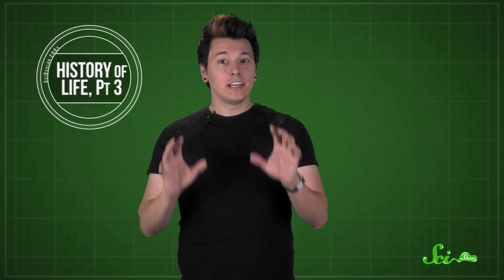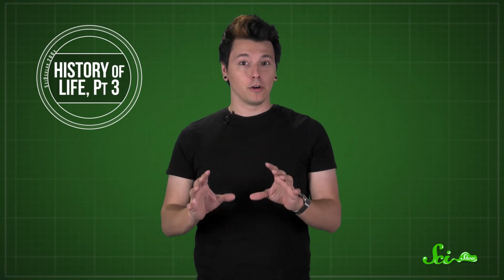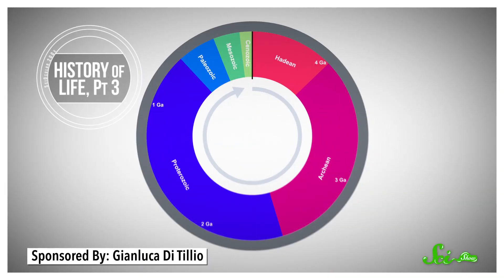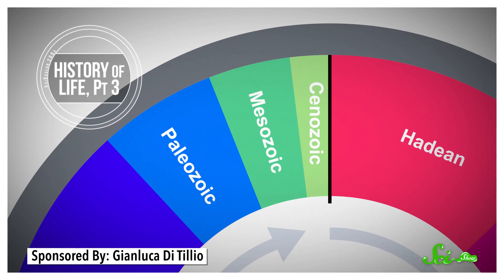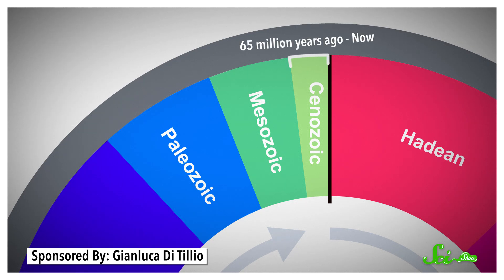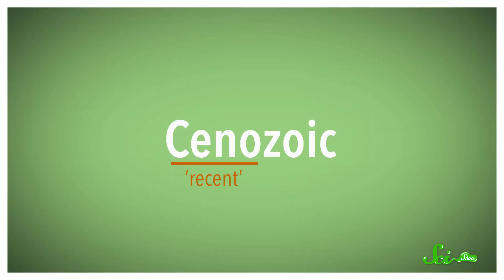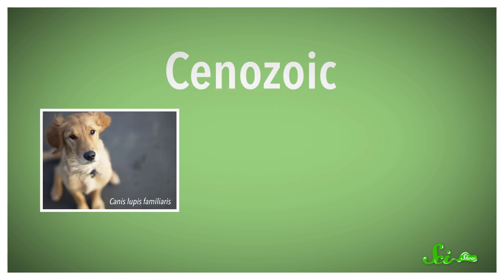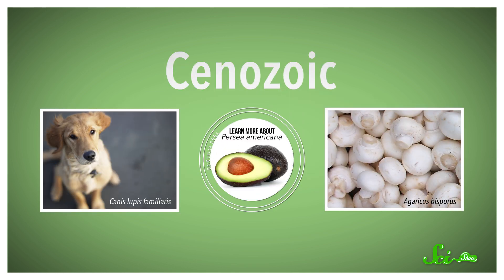Today, we're going to conclude our mini-series about the history of life on Earth by talking about the Cenozoic Era, from 65 million years ago to the present. Cenozoic means 'recent animals,' which makes sense because it's the era we're still in. During the Cenozoic, animals and plants and everything else evolved to the forms we know today.